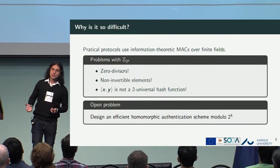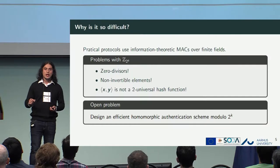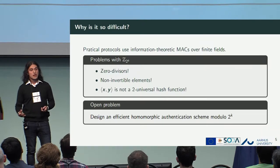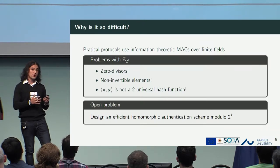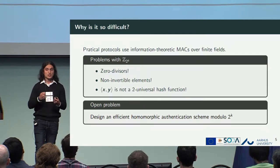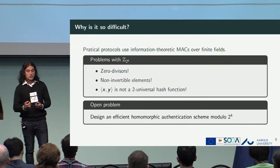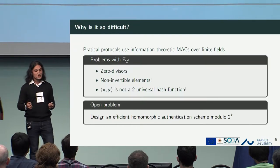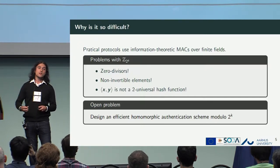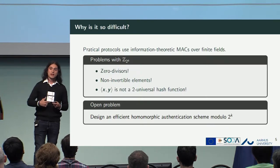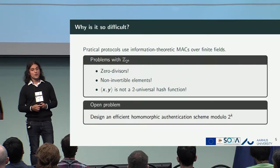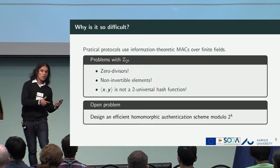Why is it so difficult to develop a protocol in this setting? Many practical solutions for dishonest majority MPC require the use of message authentication codes to make sure that everything is correct. These work very nicely over fields, but when you take them to the ring setting, you have issues because you have zero divisors — numbers that multiply together to give zero even though each number is non-zero — non-invertible elements, and taking the dot product is not a two-universal hash function, which is something very standard over fields. So it's been an open problem to develop an efficient homomorphic authentication scheme over this ring setting.